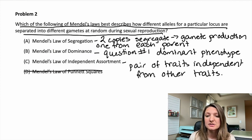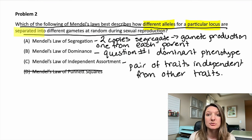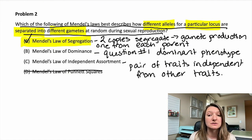Mendel's law of pennant squares doesn't exist. So when we're looking at the specific examples of this problem, we have different alleles on a particular location, which is locus, and they separate into the different gametes. So our answer is Mendel's law of segregation.